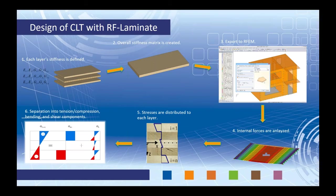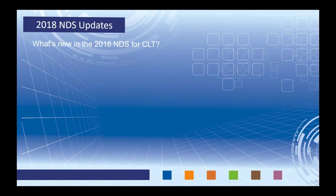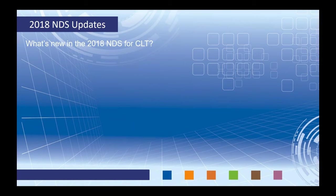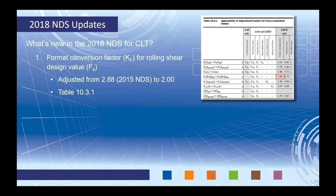As for the 2018 NDS updates, there were only two revisions in chapter 10 for CLT. The first is the format conversion factor K sub F, applicable for the rolling shear design value F sub S within LRFD design. Within the 2015 NDS, this was 2.88, and it was simply adjusted to 2.0. You can see this within table 10.3.1 of the 2018 standard. Within RF Laminate, when you have the 2018 selected, it will automatically take into account that small change.